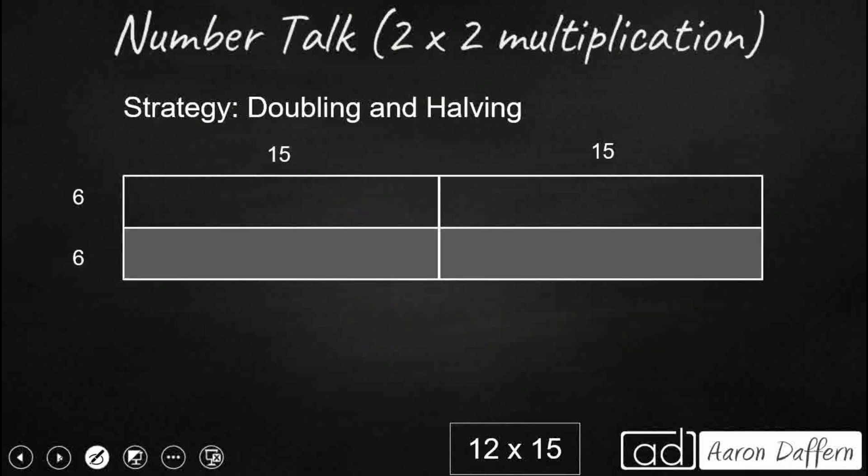Now, doubling and halving is another good strategy. So even if distributive property doesn't work, we can double and half. So let's take our 12 times 15. And what we're going to do is we're going to keep a balanced equation. We're going to take one of our factors. We're going to cut it in half. So in this case, we're going to take our 12. We're going to cut it in half.